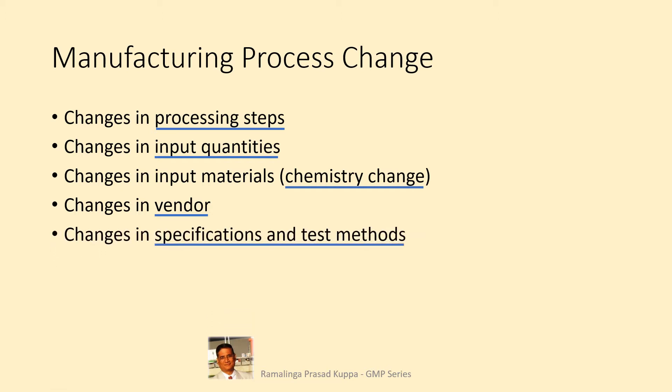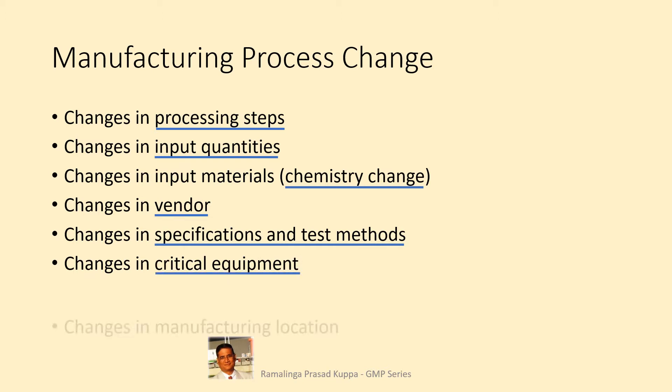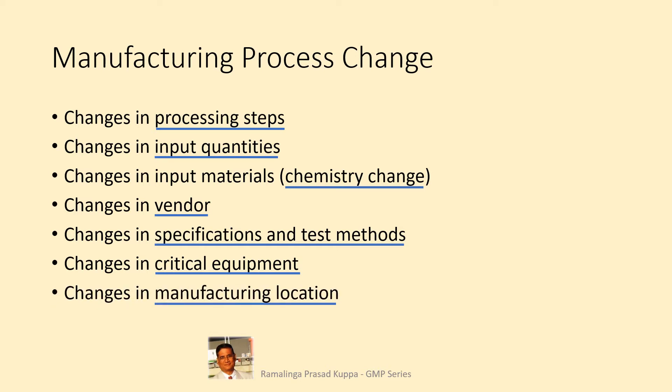Changes in specifications and test methods: if there is no process change and only test methods and specifications are revised, it may be considered as minor if the revised process material can be evaluated successfully with the validated method. Changes in critical equipment is considered as a major change. Changes in manufacturing location is also considered as a major change.